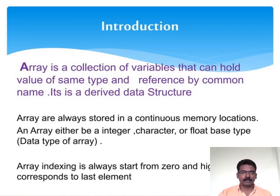Coming to the introduction, the definition for an array: an array is a collection of similar data items that are stored in contiguous memory locations. Contiguous memory means all the elements under the array will be stored in continuous memory locations. Along with the definition, we have to address indexing — indexing is the name given to each and every memory location named under an array.